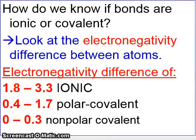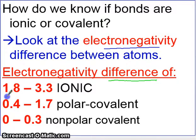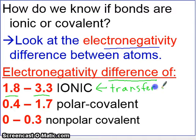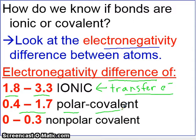How do we know if bonds are ionic or covalent? The technical way is by looking at the electronegativity difference between atoms. If the difference is large — from 1.8 to 3.3 — the bond will be ionic, because one element doesn't want electrons and the other really does, so one just gives the electron over. If the difference is somewhere in between, it will be a polar covalent bond with unequal sharing. If the difference is really small, it will be nonpolar with equal sharing.